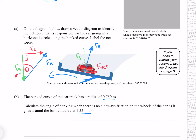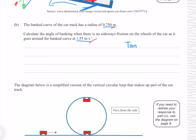We can find the force of gravity by taking the mass and multiplying it by the gravitational acceleration. Because we know the mass, radius, and velocity, we can also find the centripetal force. The force of gravity is our adjacent side and our centripetal force is the opposite side, meaning we can use the TOA relationship in SOHCAHTOA. That is, tan of the angle equals our opposite (centripetal force) divided by the adjacent (gravitational force). Solving for the angle by taking the inverse tan of both sides.